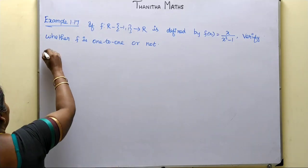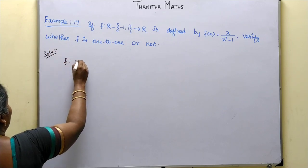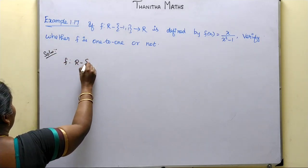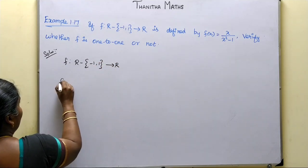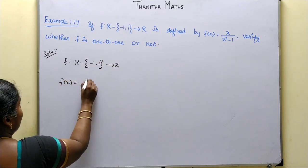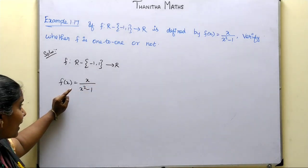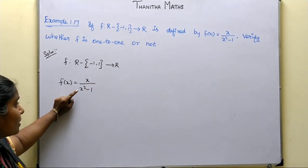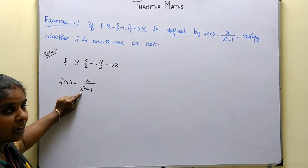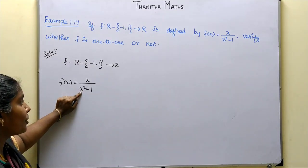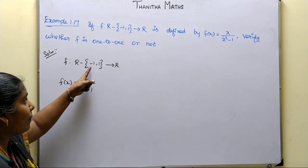What do you say about this function on ℝ\{-1,1}? Why are minus 1 and 1 removed? Because f(x) = x/(x²-1) is a fraction, and the denominator value becomes 0. When x equals plus 1 or minus 1, the denominator is 0. That's why we don't include minus 1 or 1 in the domain.